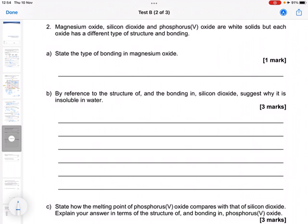State the type of bonding in magnesium oxide. So this is giant... well, that's the structure. The bonding is ionic.